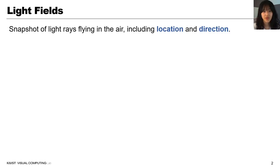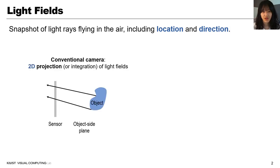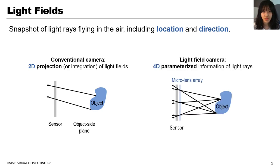Light fields are snapshots of light rays flying in the air. Conventional cameras capture 2D projection, which is an integration of light fields within its field of view. Light field cameras capture 4D parameterized information of the light rays, including the directional information as well.